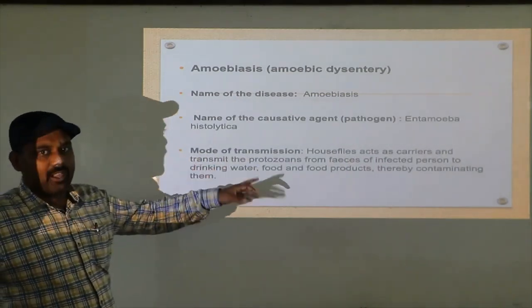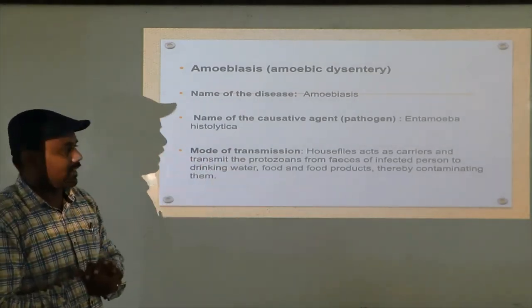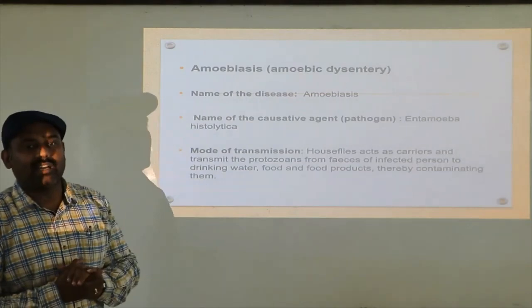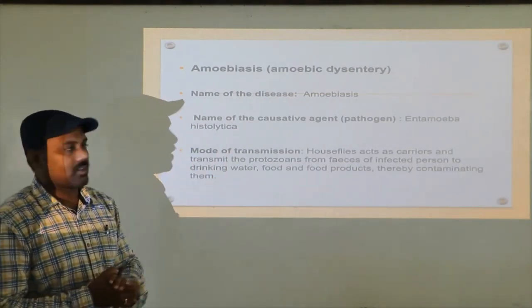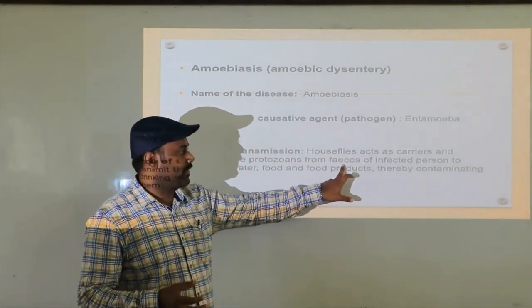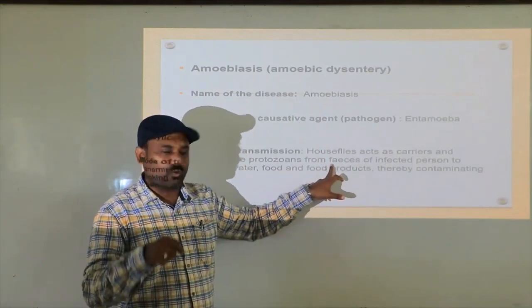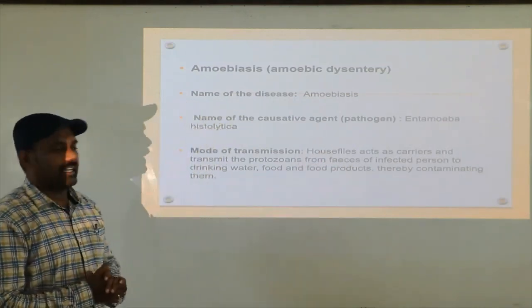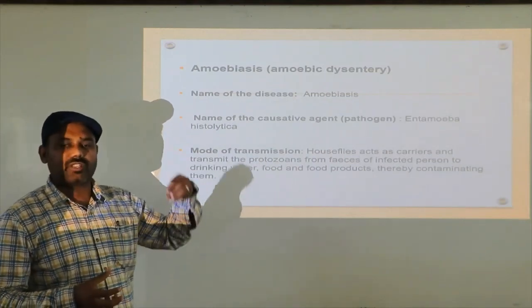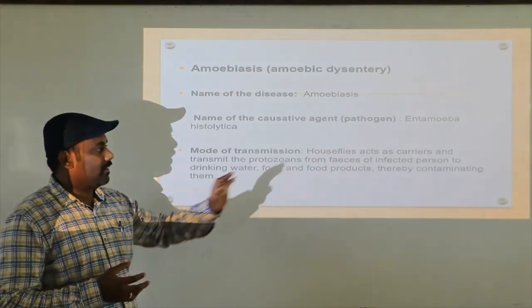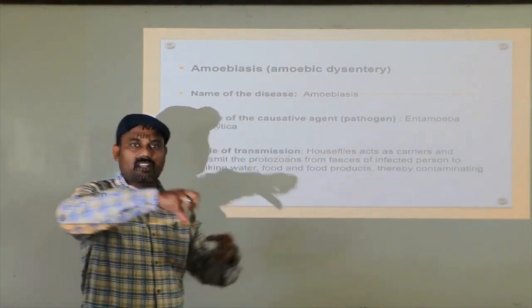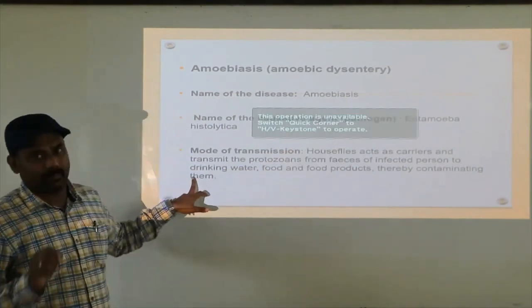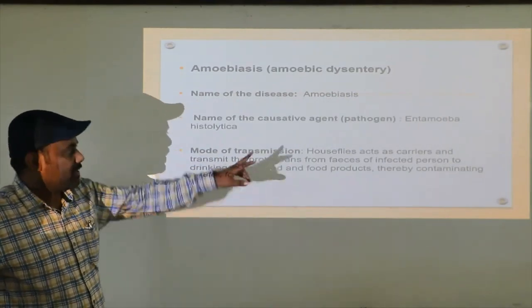Mode of transmission — very important. This is also carried by a mechanical vector, or mechanical carriers, that is house flies. These house flies act as mechanical carriers and transmit Entamoeba histolytica from fecal matter — that is stool of an infected person — to drinking water, food, and food products, thereby contaminating them. These house flies sit on the fecal matter of the infected person, then come back and sit on food, drinking water, or food products — thereby contaminating them. The mode of transmission is by means of house flies.